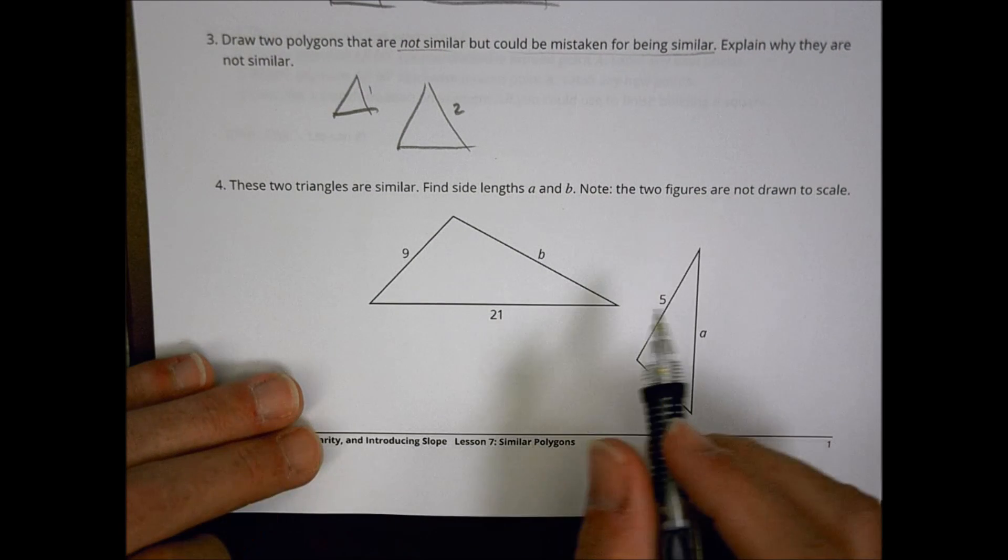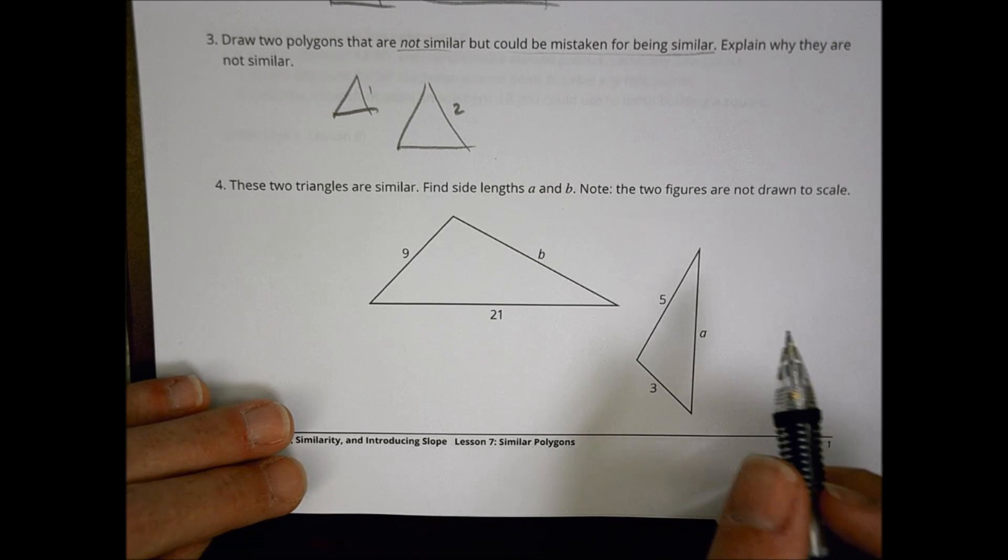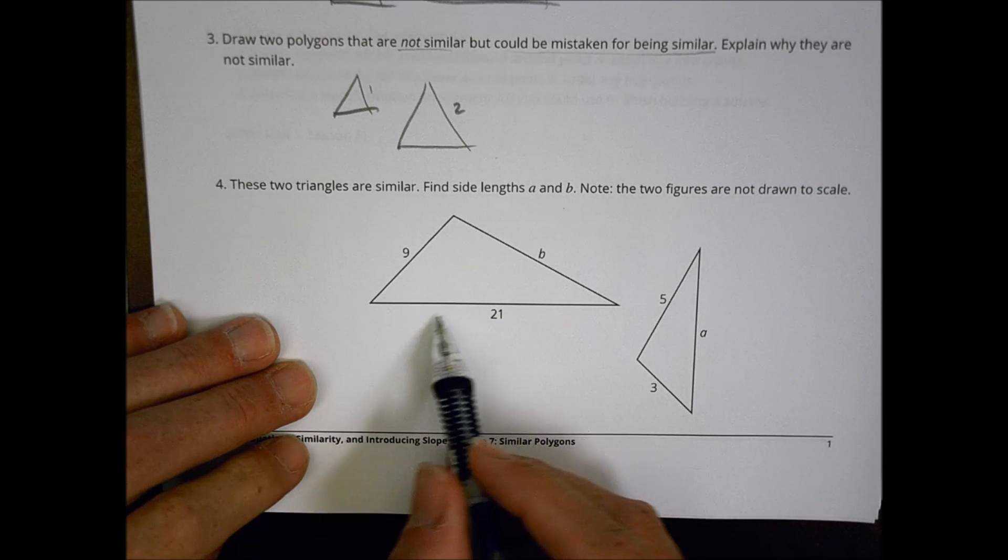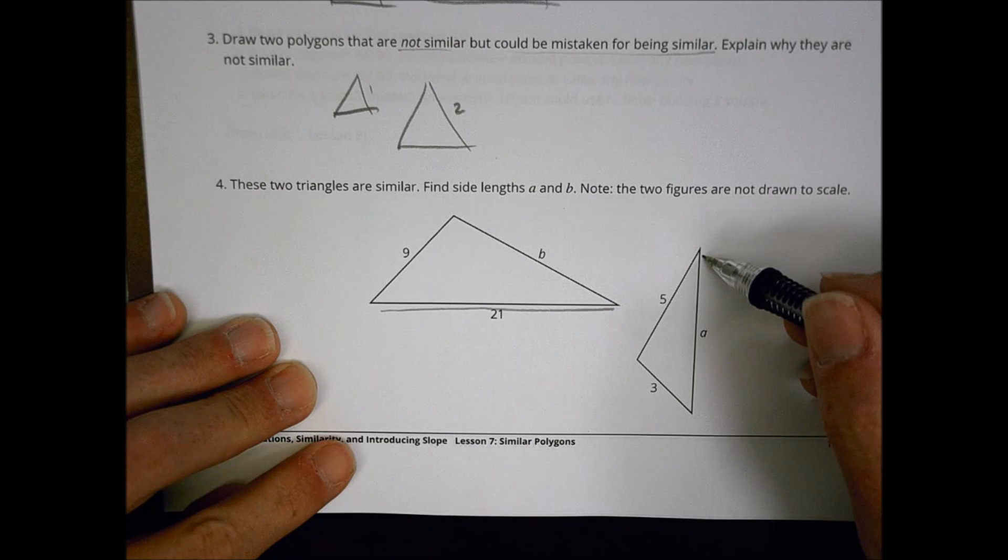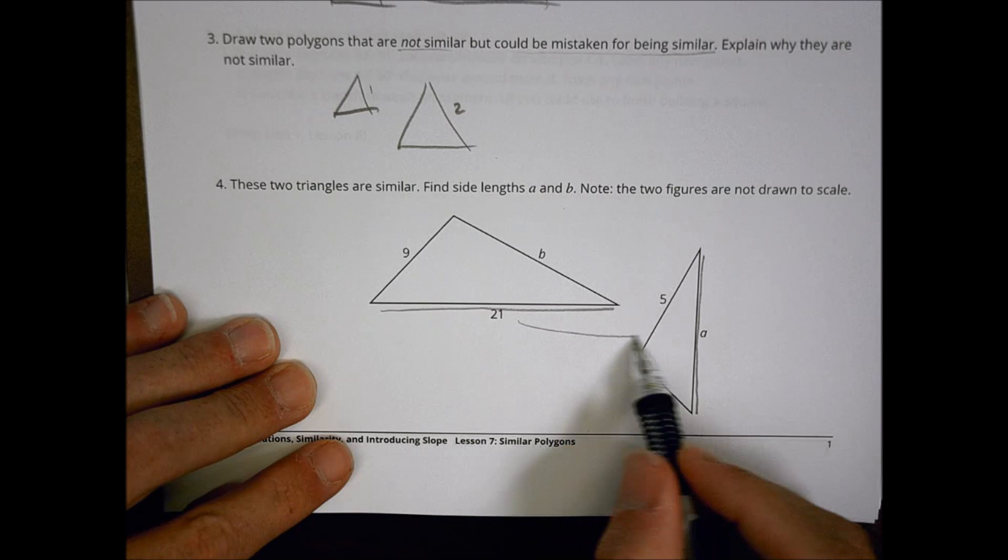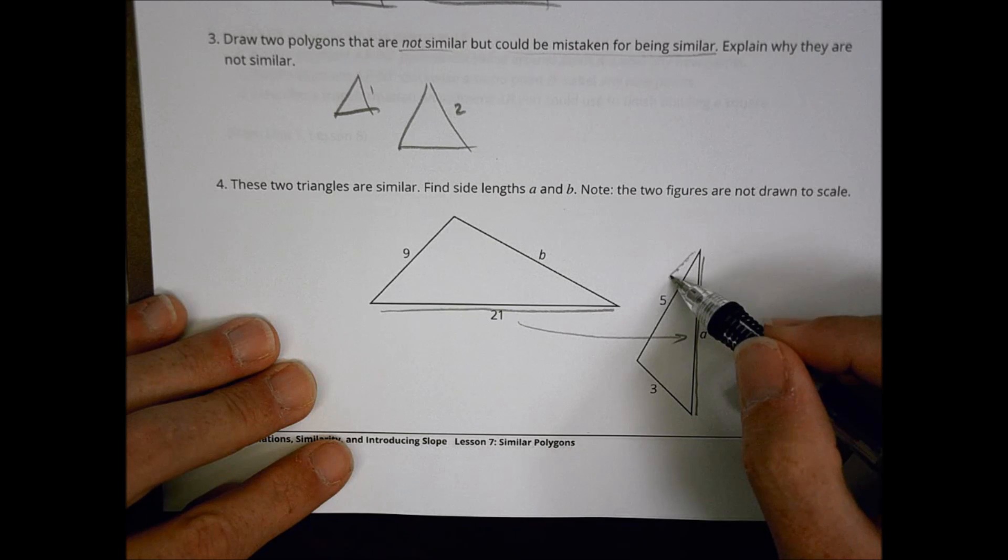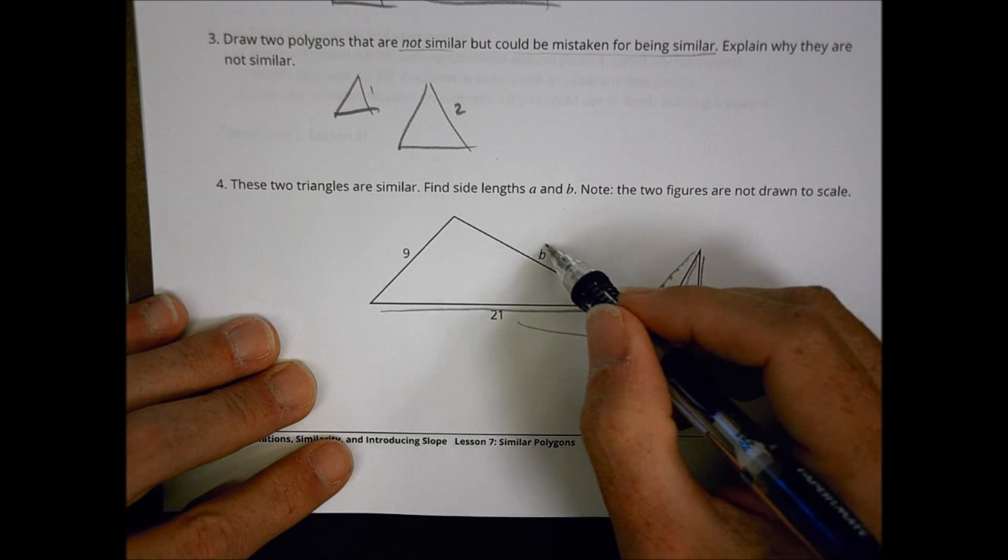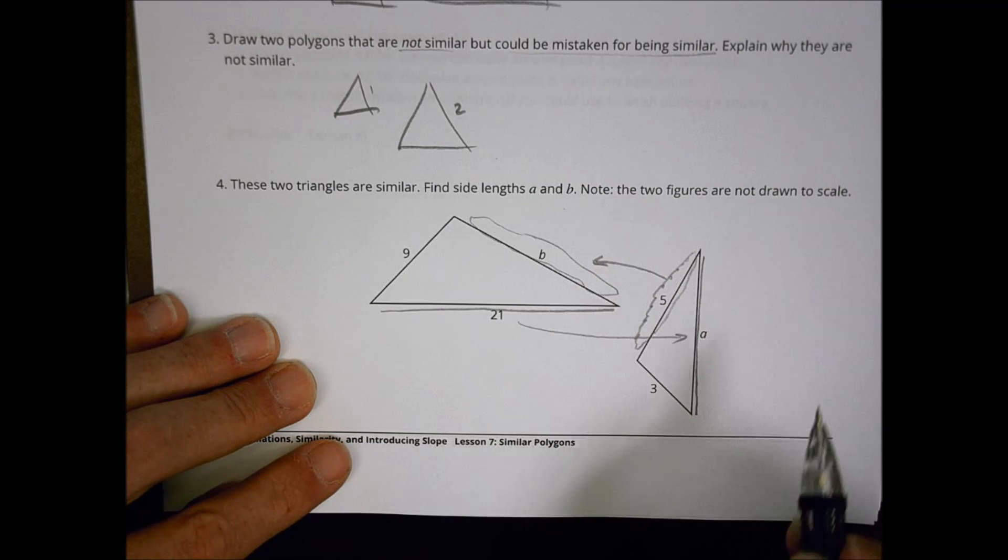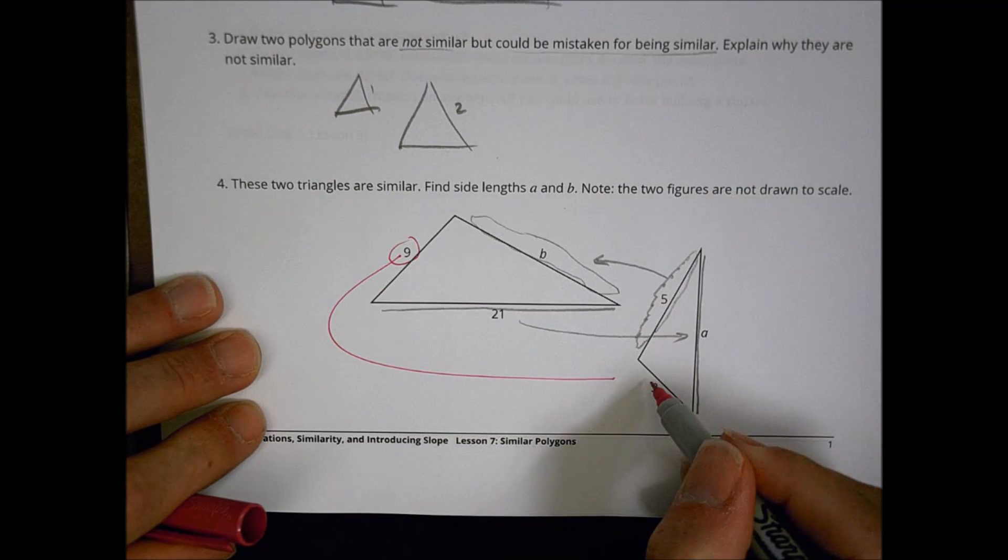For number 4, these two triangles are similar. Find lengths A, B and note the two figures are not drawn to scale. So, looking at the long side, the long side is 21 and this long side is A. So the question is, how do I get from 21 to A? Not sure. Here's my long side. This side here is 5 and 5 is going to match up with this guy right here, B. So, how do I get from 5 to B is my question there. And what I do know is I do happen to know how to get from 9 to 3.